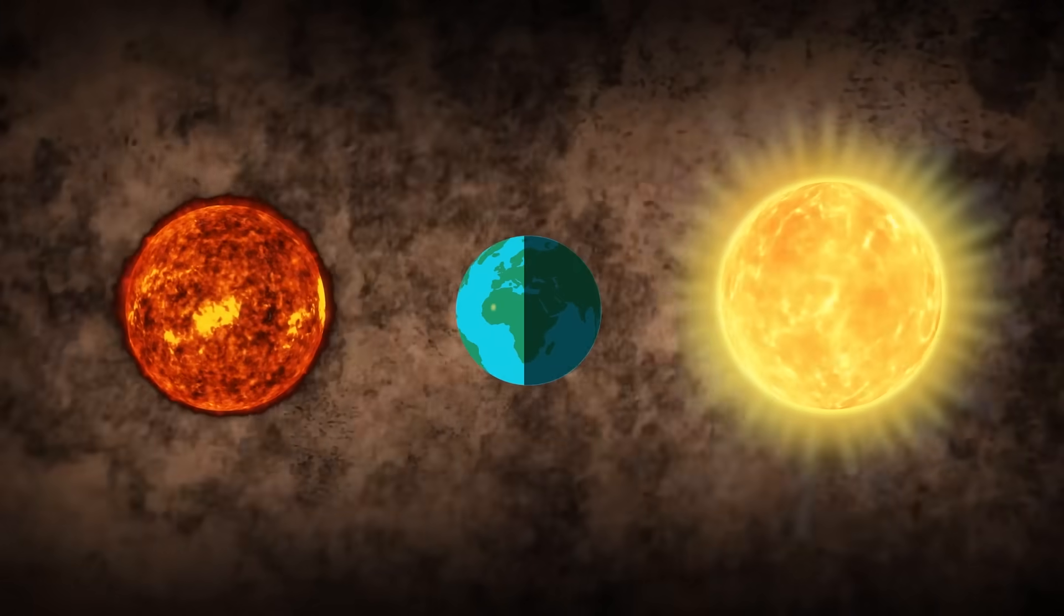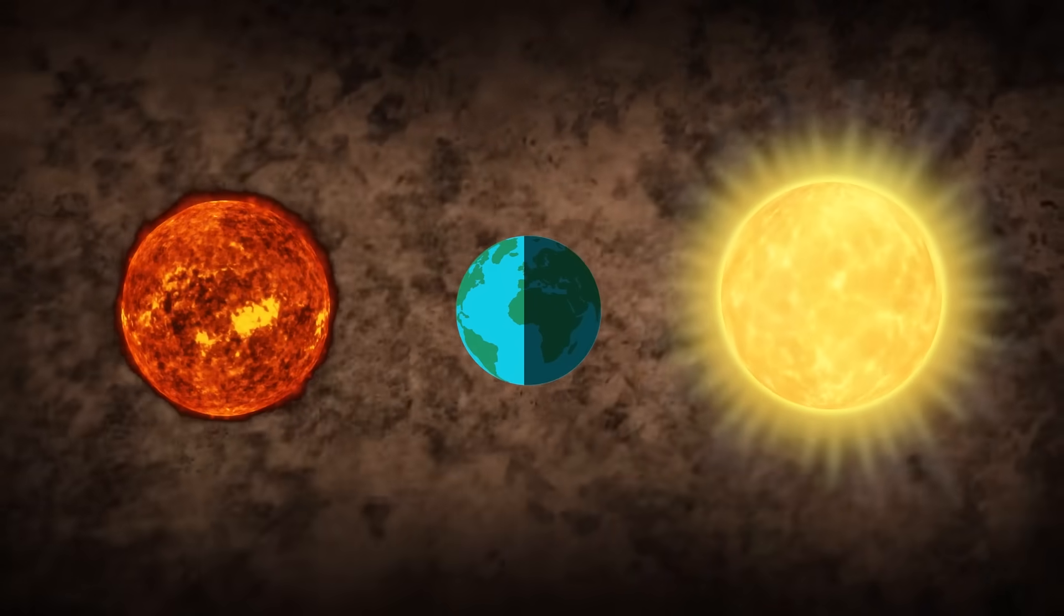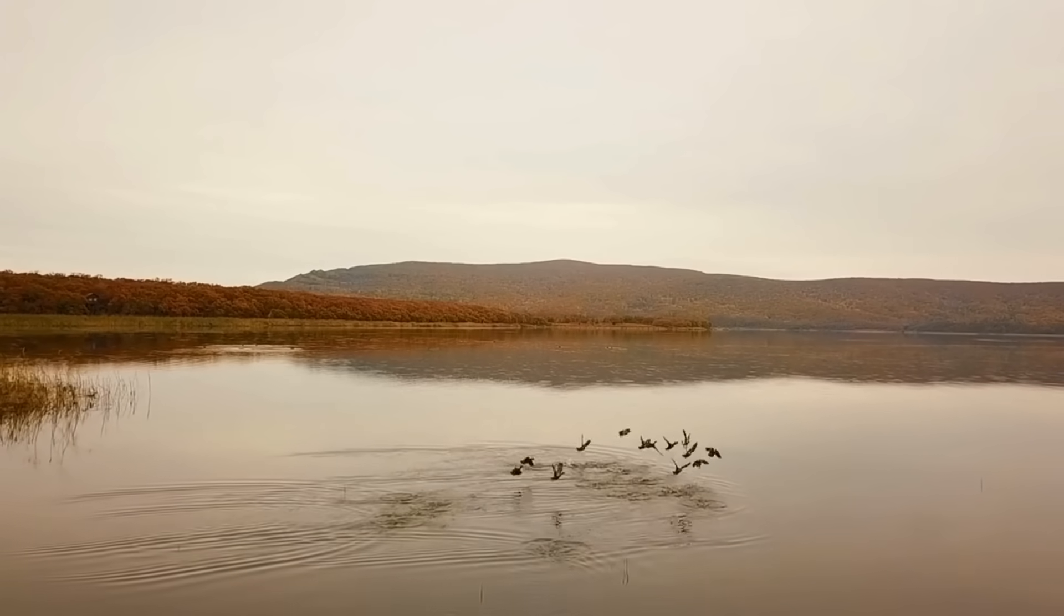This means that if the Earth were to orbit Proxima Centauri, it would receive much less light and heat than we currently receive from the Sun. This would have enormous consequences on our biosphere and our planet.